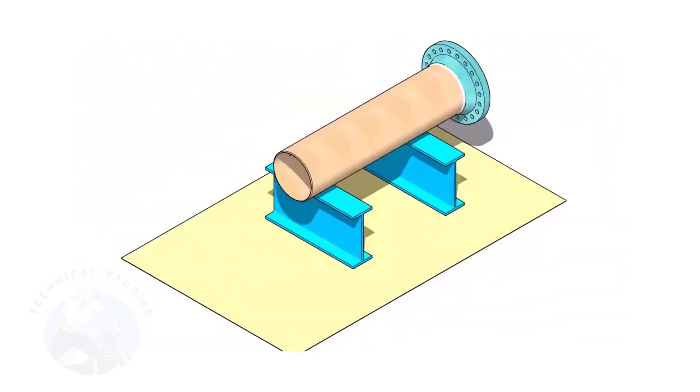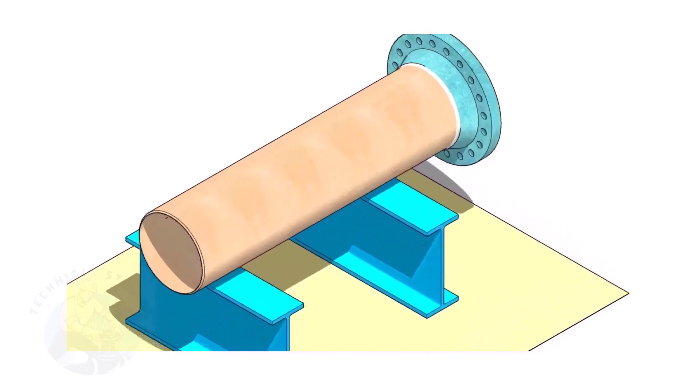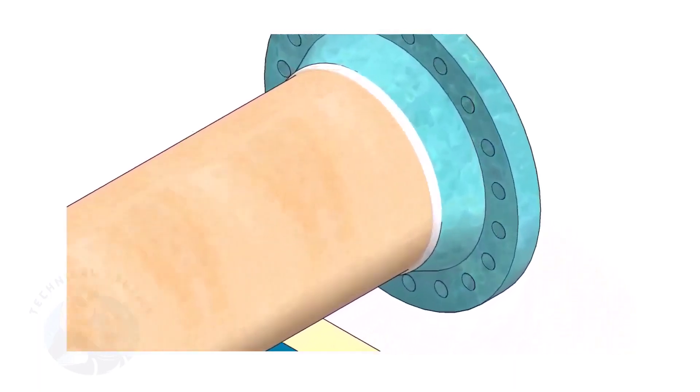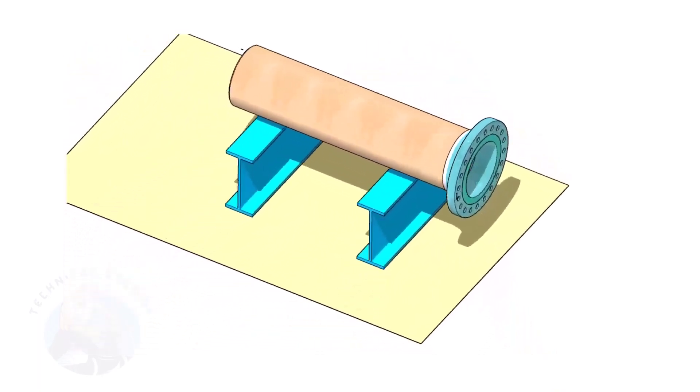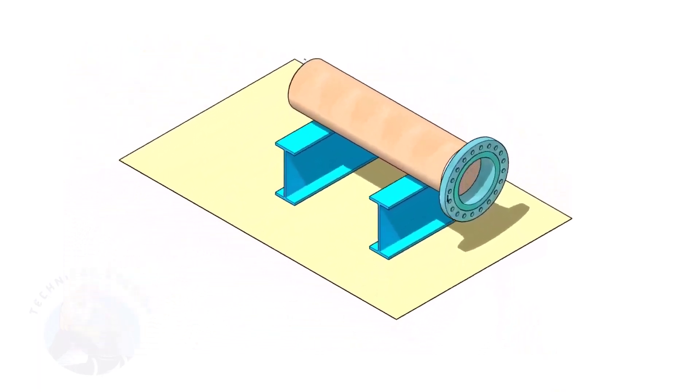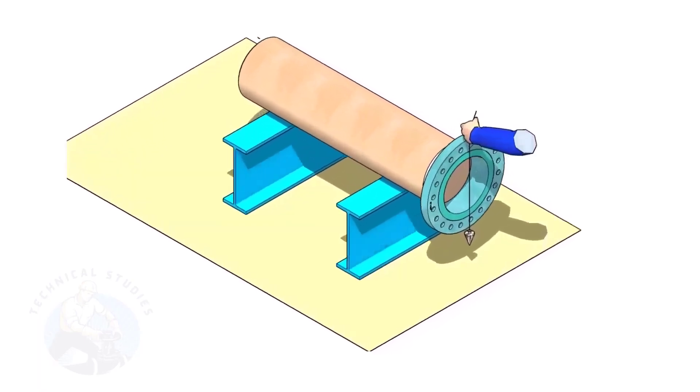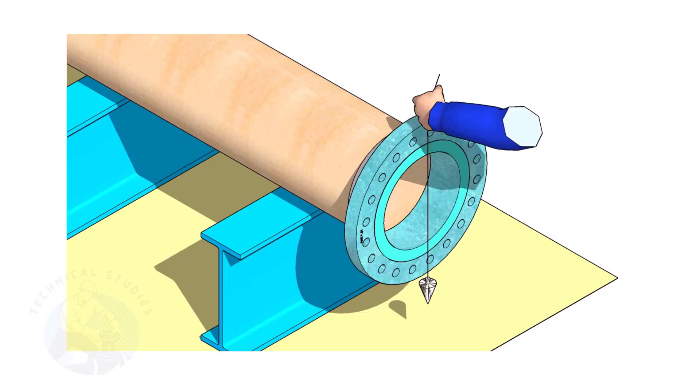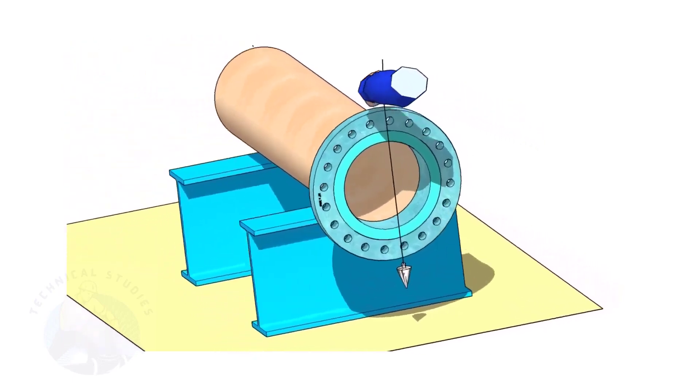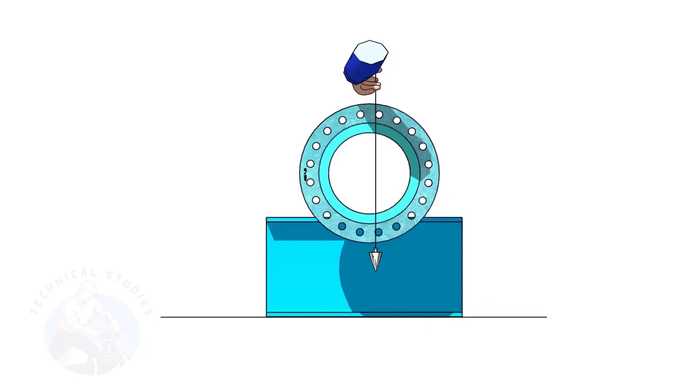Assume that the flange is welded to the pipe. Put the spool on suitable supports. Correct the plumbness of the flange. Choose a set of holes closer to the center of the flange. This will ensure more accuracy.